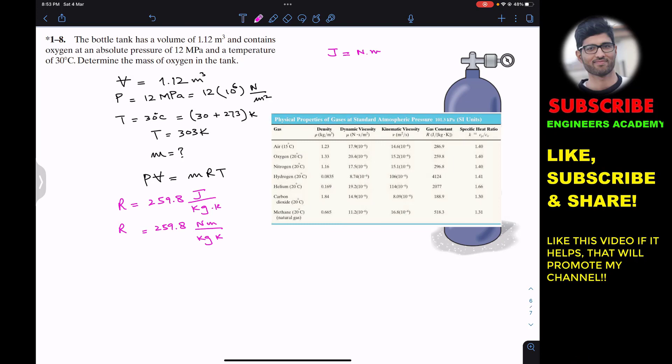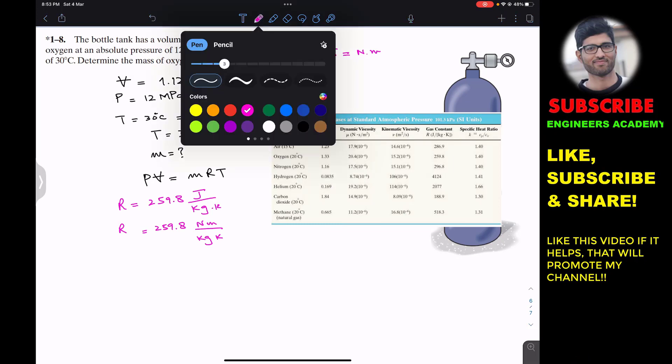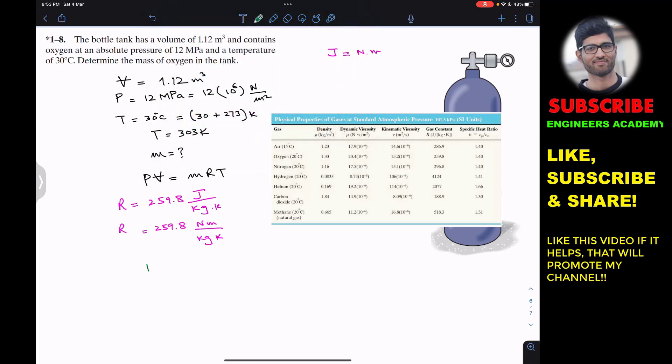After knowing the R value, we can use the ideal gas equation. The ideal gas equation is P times V equals MRT. We are required to find the mass of the oxygen in the tank. From this equation, we can rearrange it and say that mass is P times V divided by R into T. Remember that T should be in Kelvin while using the ideal gas equation.